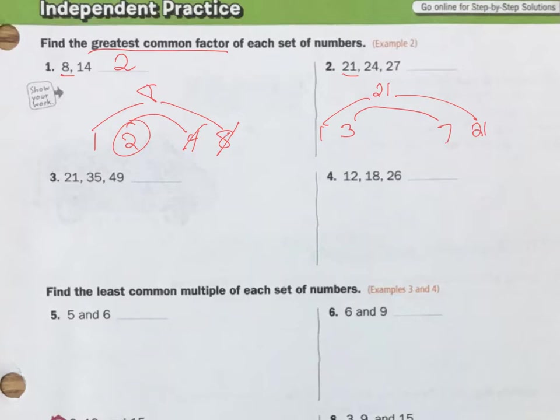21 does not go into 24 or 27. 7 does not go into those. So 3. Let's see. 3 times 8 gets me 24. And 3 times 9 gets me 27. So, I know 3 goes into all of them. 3 is my greatest common factor.